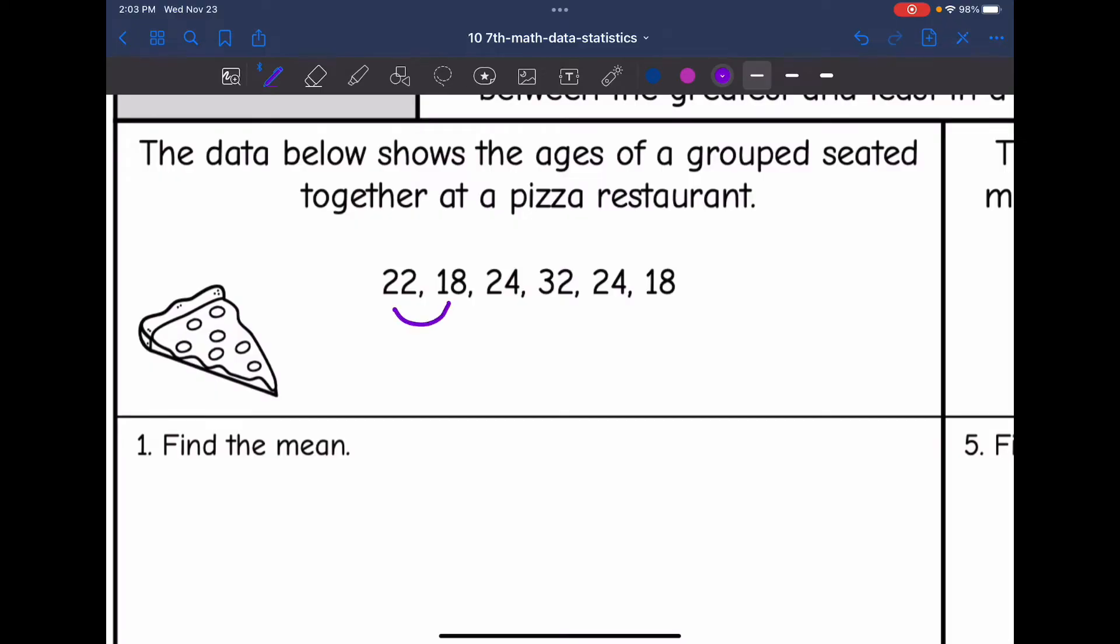22 plus 18 is 40, 40 plus 24 is 64, 64 plus 32 is 96, 96 plus 24 is 120, and then 120 plus 18 is 138.